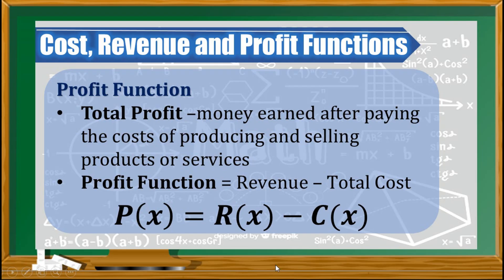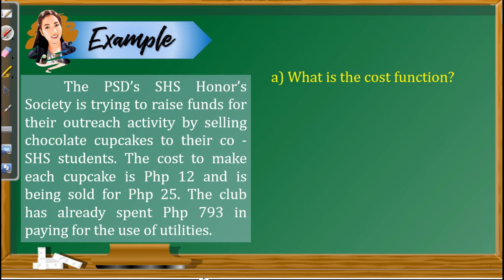Let us now apply the three concepts. Example: The PSD Senior High School Honors Society is raising funds by selling chocolate cupcakes. The cost to make each cupcake is 12 pesos and it is being sold for 25 pesos. The club has already spent 793 pesos for the use of utilities. From the problem: variable cost = 12 pesos, price per cupcake = 25 pesos, and fixed cost = 793 pesos.